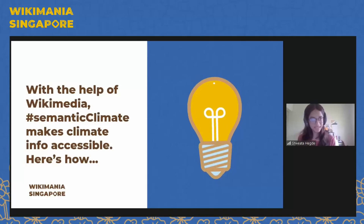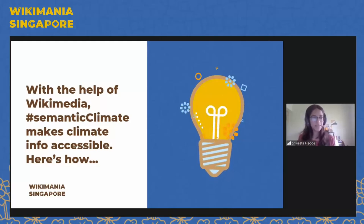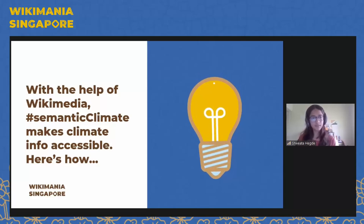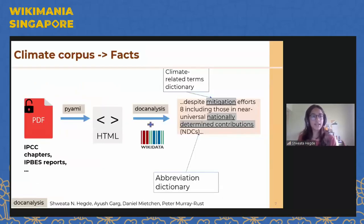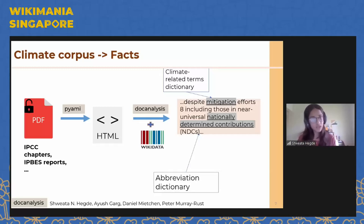That's where Semantic Climate comes into picture. With the help of Wikimedia, Semantic Climate is making climate information more accessible. In the next set of slides, I'm going to describe the pipeline of our project. We have different sets of climate reports usually available as PDFs. Our tool called ByAmy converts these PDFs into HTML. HTML is much easier to work with, both for software and for humans. Once we have that HTML — and it takes a lot of effort to get there — we can do a lot of interesting things.